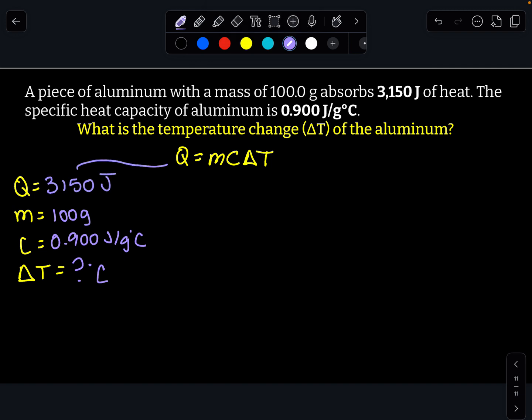And then my q is positive 3,150 joules. Now I'm going to plug these in to my equation. And so that gives me 3,150 equals 100 times 0.900. And we don't know delta t, so we'll just call it x.